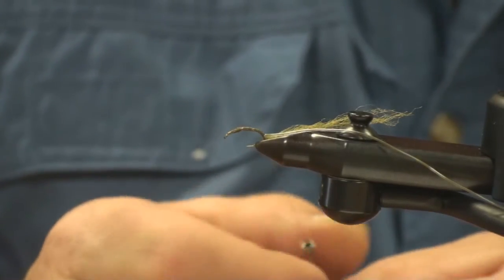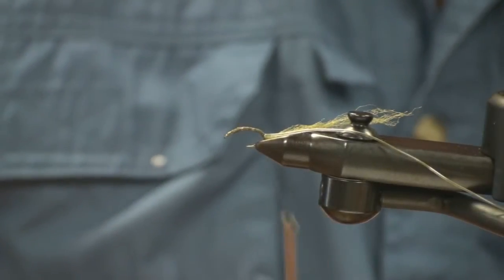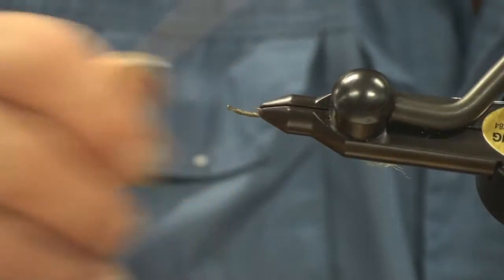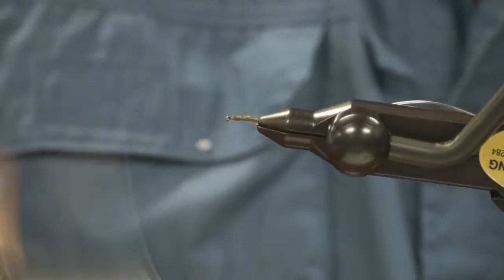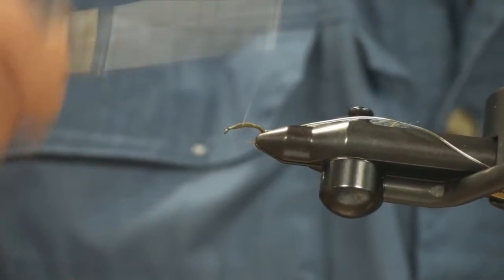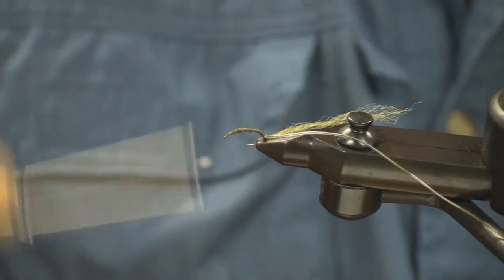What you want to do, you want to flatten your thread out as much as possible and proceed to just cover any shiny part that you see in that thread, any shiny part coming through that thread base. Cover that all up just behind the Antron hump.